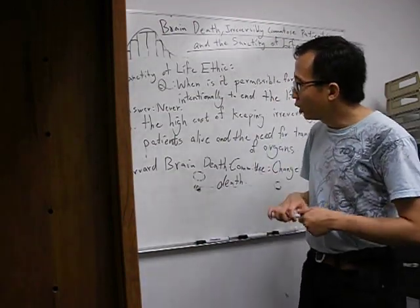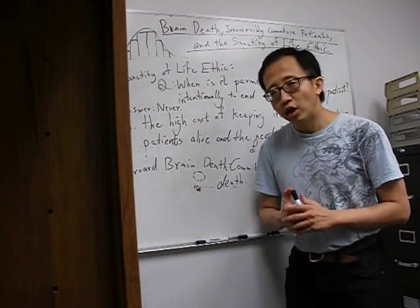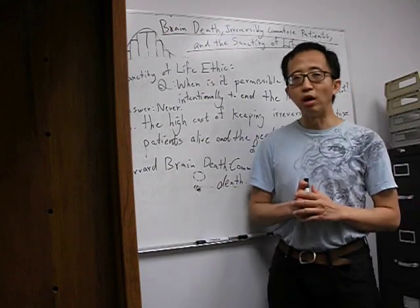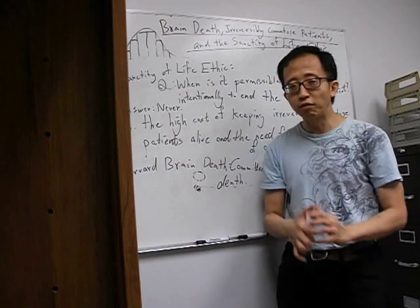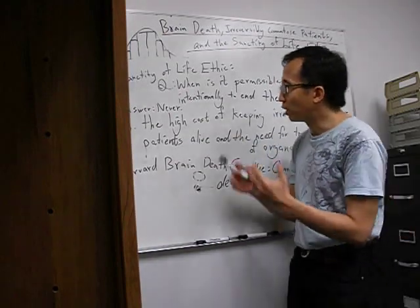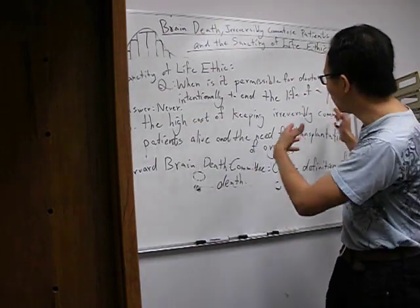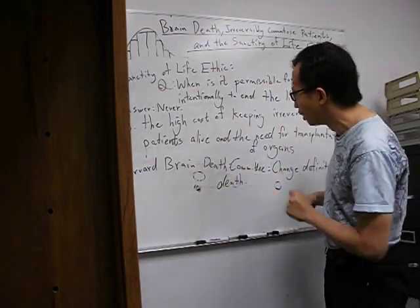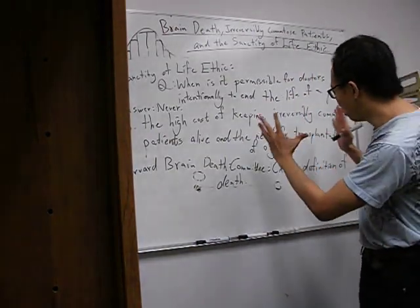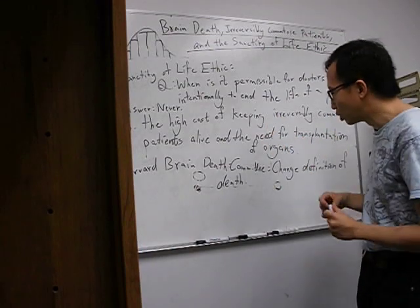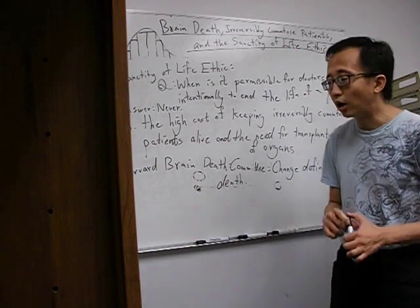However, in the 20th century, starting from the 20th century, due to advances in medical technology, it has become possible to keep patients that would previously have died on life support indefinitely. And what this means is that there is a high cost of keeping these irreversibly comatose patients alive. And also, what this also means is that the patient's organs which could be used by other people who need them for transplantation are not being used.